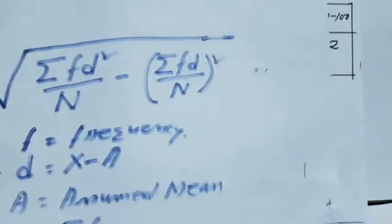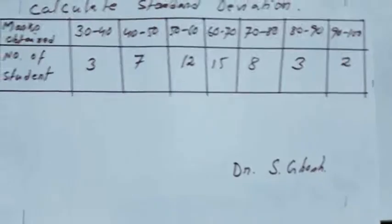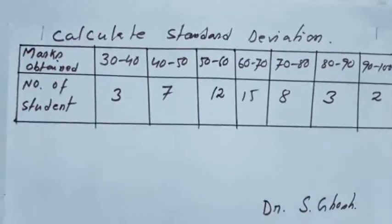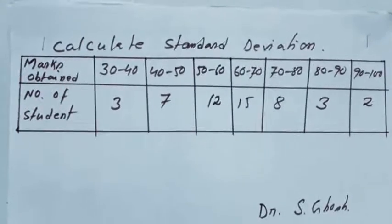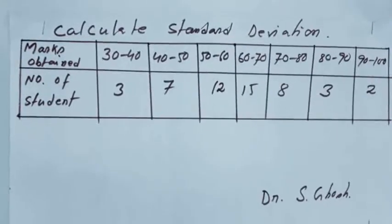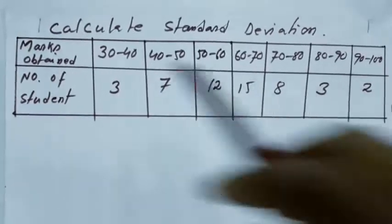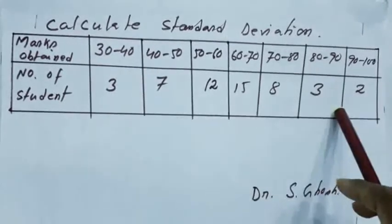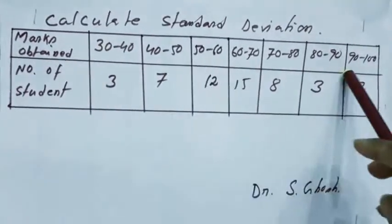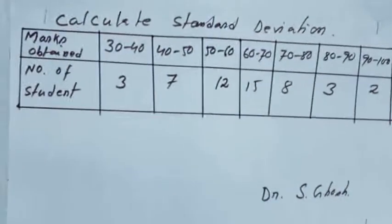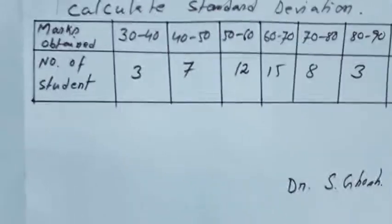Now, see the problem. Suppose this is our problem, calculate the standard deviation. We have to calculate the standard deviation. Here marks is given, and number of students, the number of students means it is frequency, and it is the X, but no X is given.